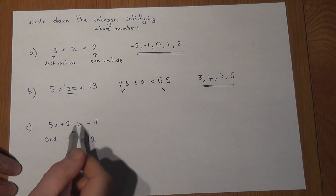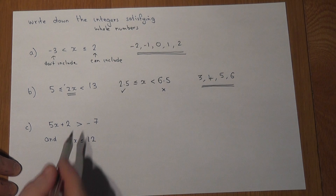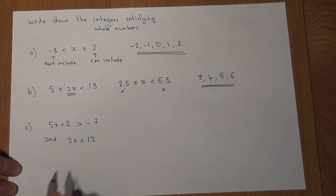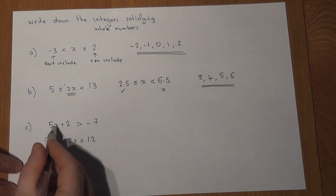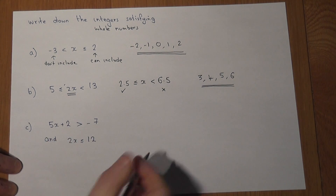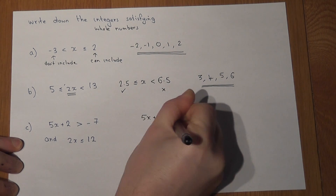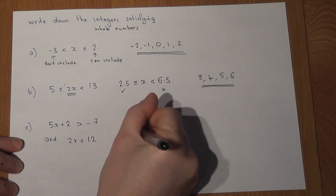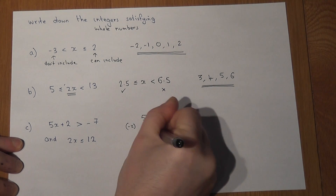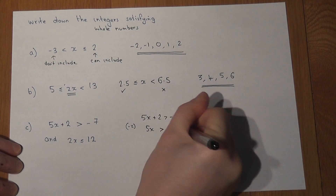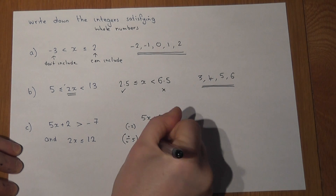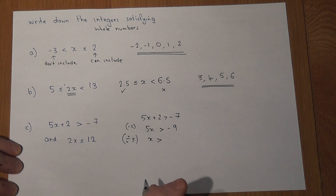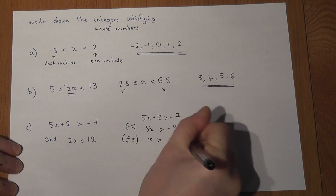The last example gives two separate inequalities. The trick here is just to solve both equations. So for 5x plus 2 is greater than minus 7, I'll take away 2 from both sides first, giving 5x is greater than minus 9. Then dividing by 5, x is greater than minus 1.8.